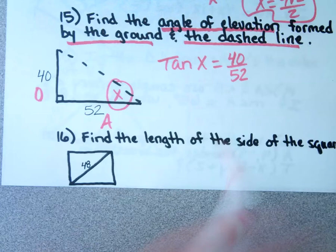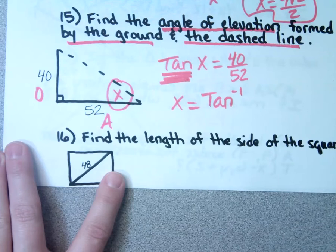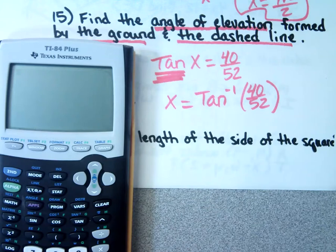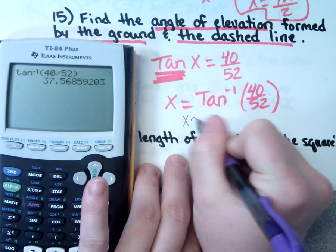If you're ever interested in finding an angle, that's when you use the inverse. In the calculator, press second tangent, then 40 over 52. Rounded to nearest tenths, you get 37.6. Most of your test is multiple choice, so you should be able to tell what to round to by the answer choices.